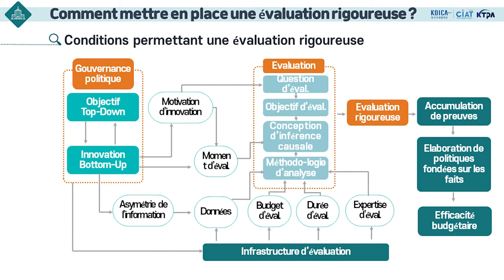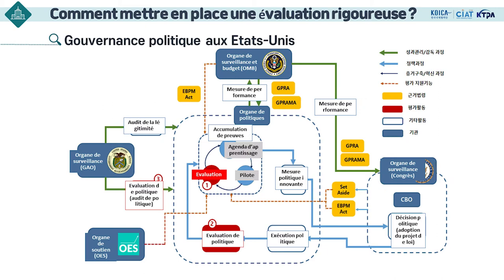Il n'y a guère de pays équipés d'un tel mécanisme — seulement quelques pays en sont équipés, dont les États-Unis. La Corée n'en est pas équipée. La politique américaine de governance illustre que divers organismes gouvernementaux portent une complexité et se donnent des indications, se contrôlent et rapportent mutuellement. Une telle relation minutieusement structurée permet d'établir un système de gouvernement qui mène à bien une évaluation rigoureuse comme celui des États-Unis.